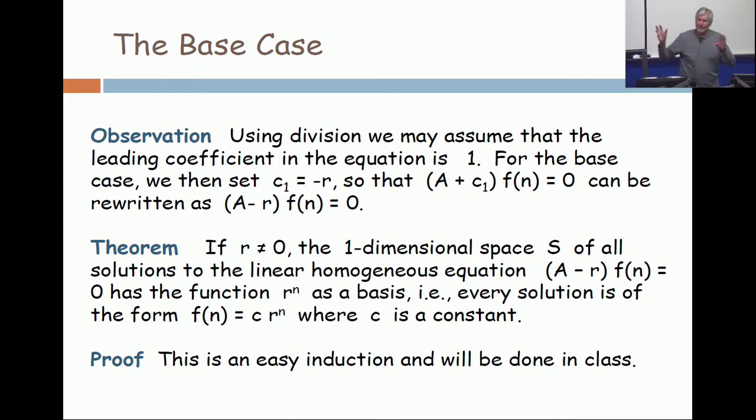But now our vectors are functions. So this line, this one-dimensional vector space, has a function as its basis. That basis is going to be R to the n. And then the elements of the solution space are just the linear combinations of that one vector.